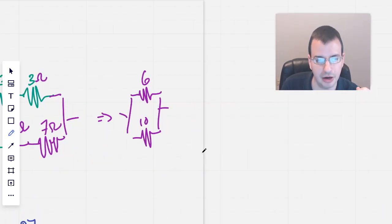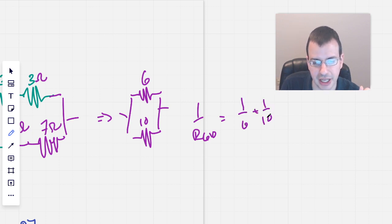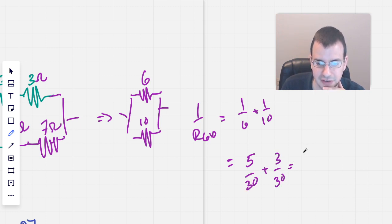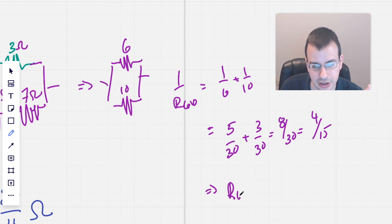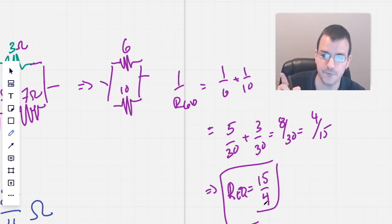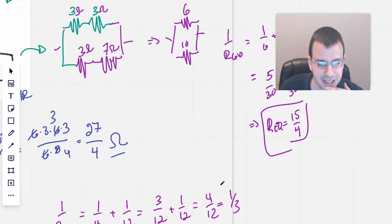Now we're going to do these in parallel. 1 over R 6, 10 equals 1 over 6 plus 1 over 10. Common denominator is 30. This will be 5 over 30 plus 3 over 30, gives us 8 over 30. Divide top and bottom by 2, we get 4 over 15. Taking the reciprocal, R equivalent here is 15 over 4. That seems reasonable.